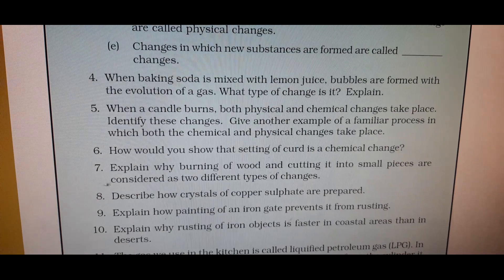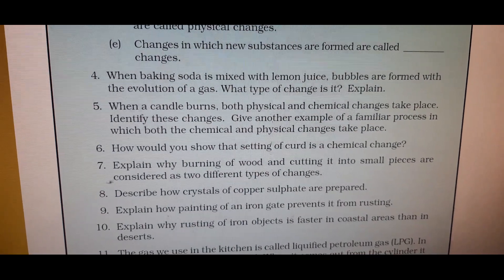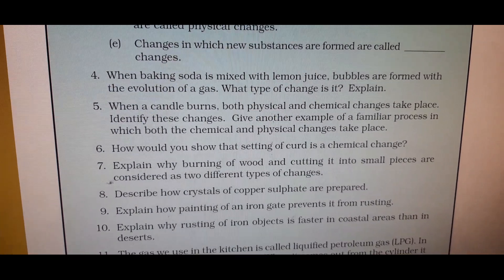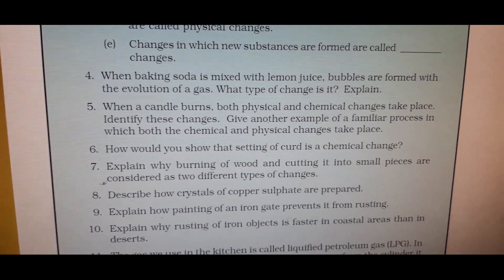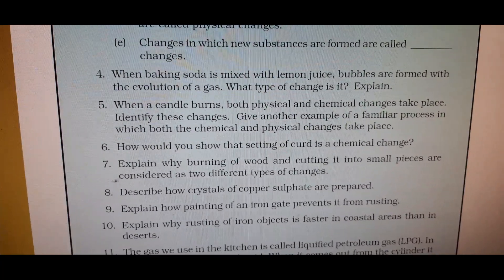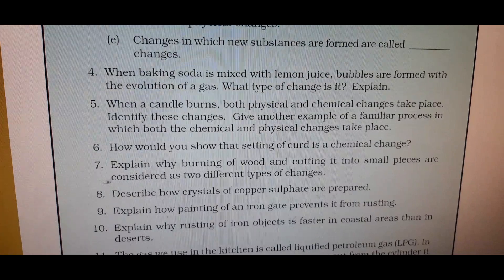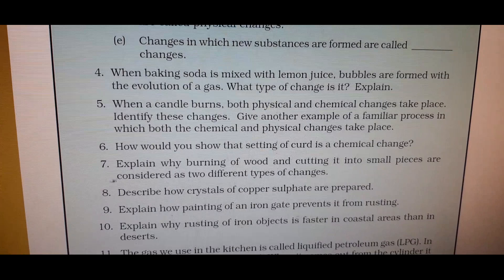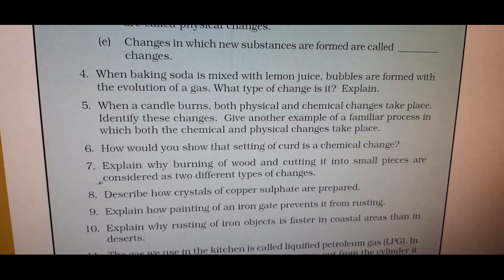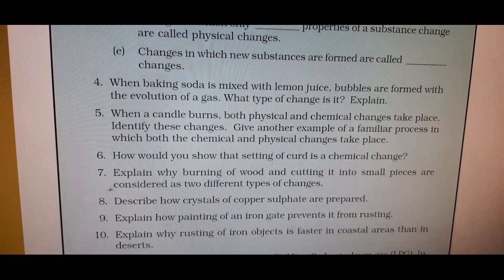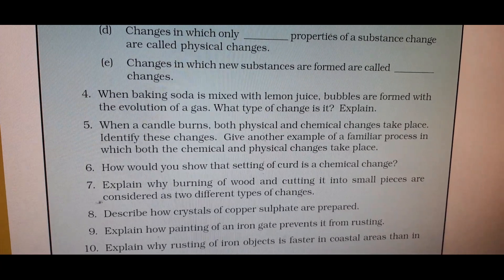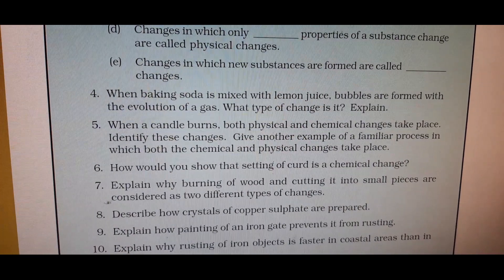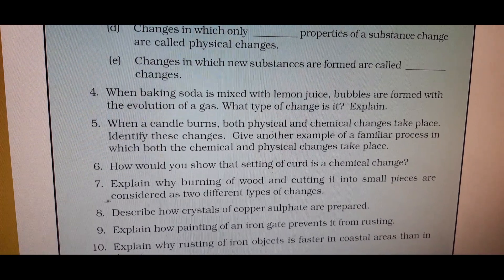Question 5: When a candle burns, both physical and chemical changes take place. Identify these changes and give another example of a familiar process in which both physical and chemical changes take place. Burning of candle is a chemical change because carbon dioxide gas is being evolved. But melting of candle is a physical change, simply the state is changing from solid to liquid.